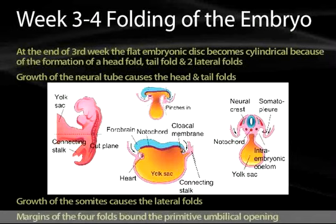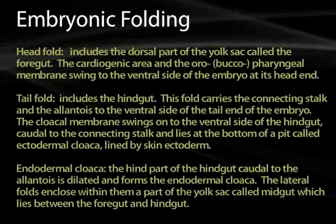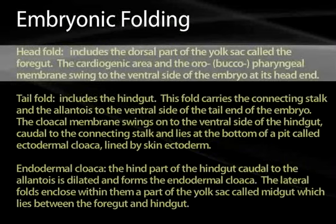Embryonic folding has a head fold which will include the dorsal part of the yolk sac, forming the foregut. This will also form the cardiogenic area, and the oral buccopharyngeal membrane will swing into the ventral side of the embryo from the dorsal aspect at its head end.